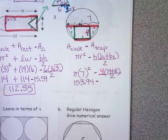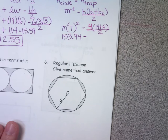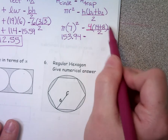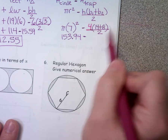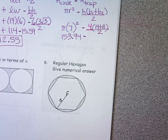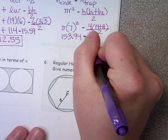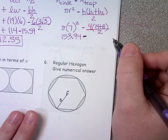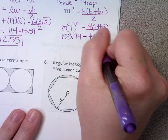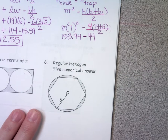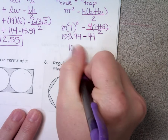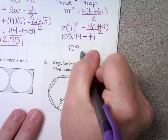Now let's work on the trapezoid. Take a second and figure out what you get for just that part. Is everybody getting 44? Yes. And then what do you get if you subtract? 109.94.